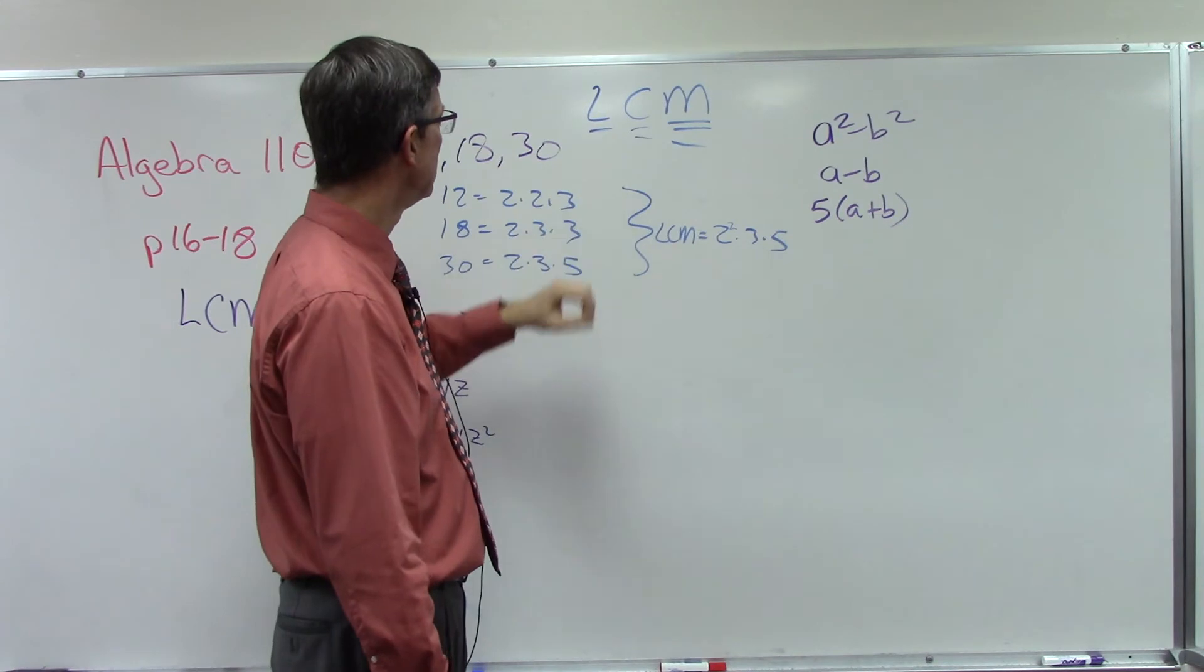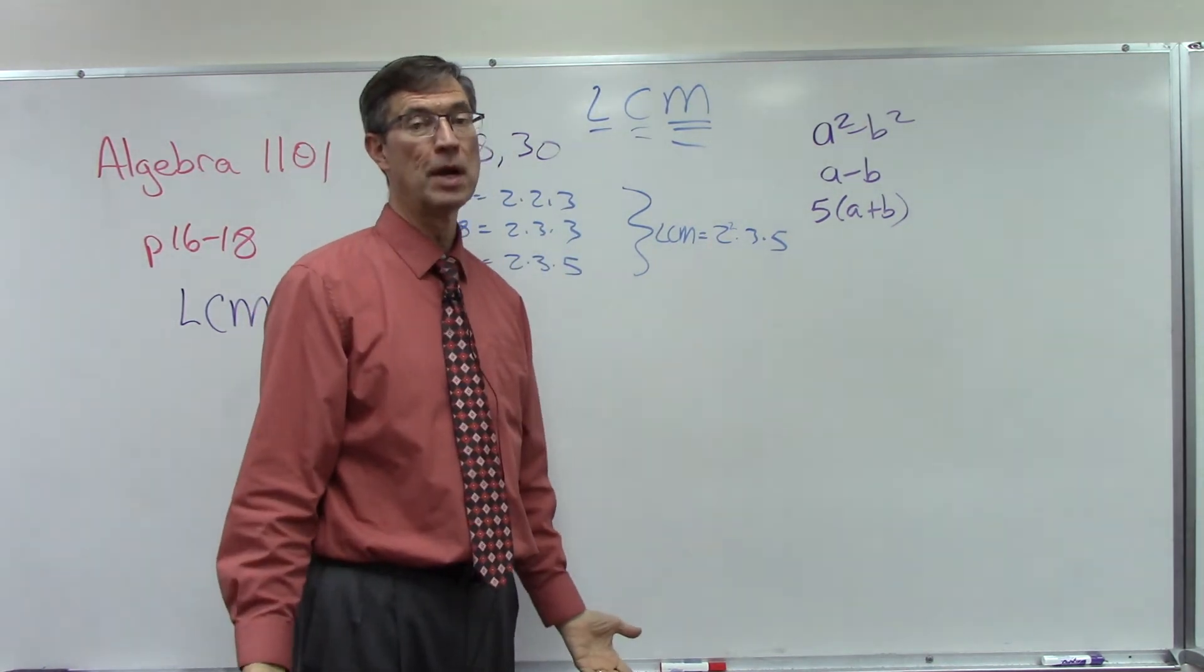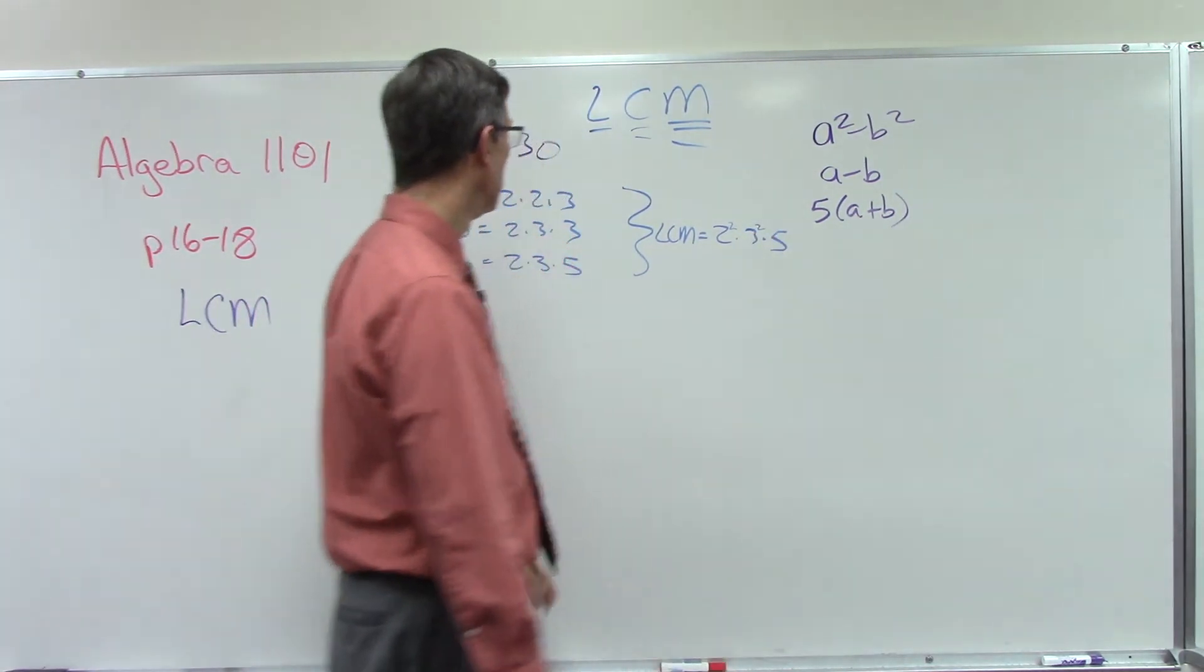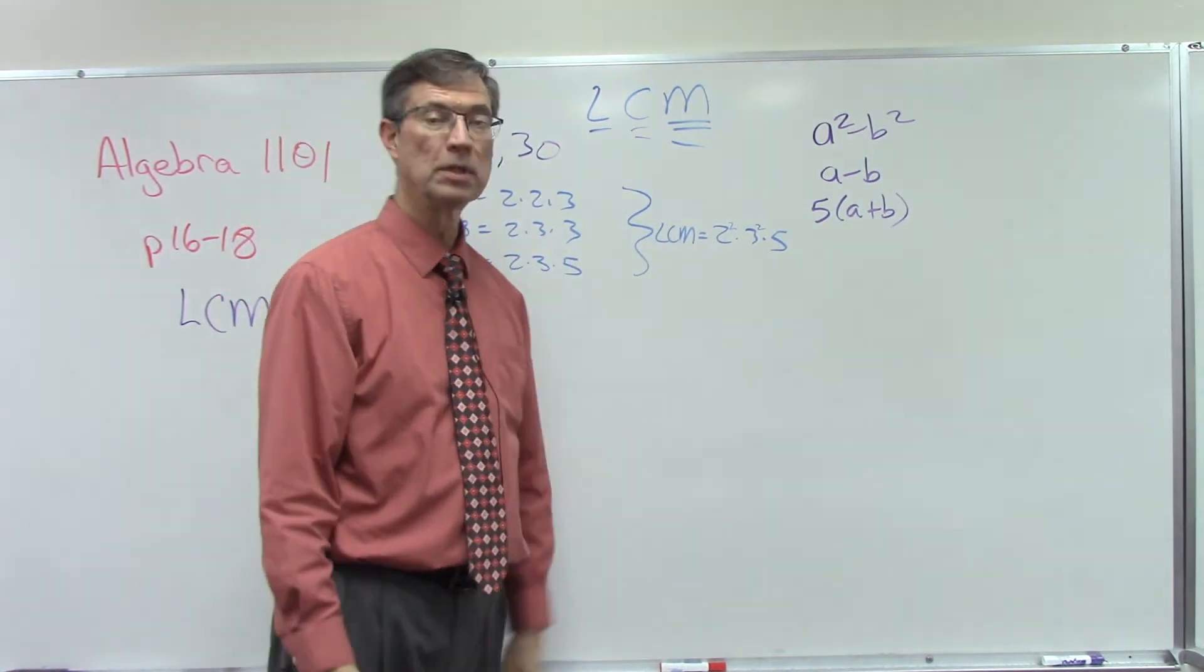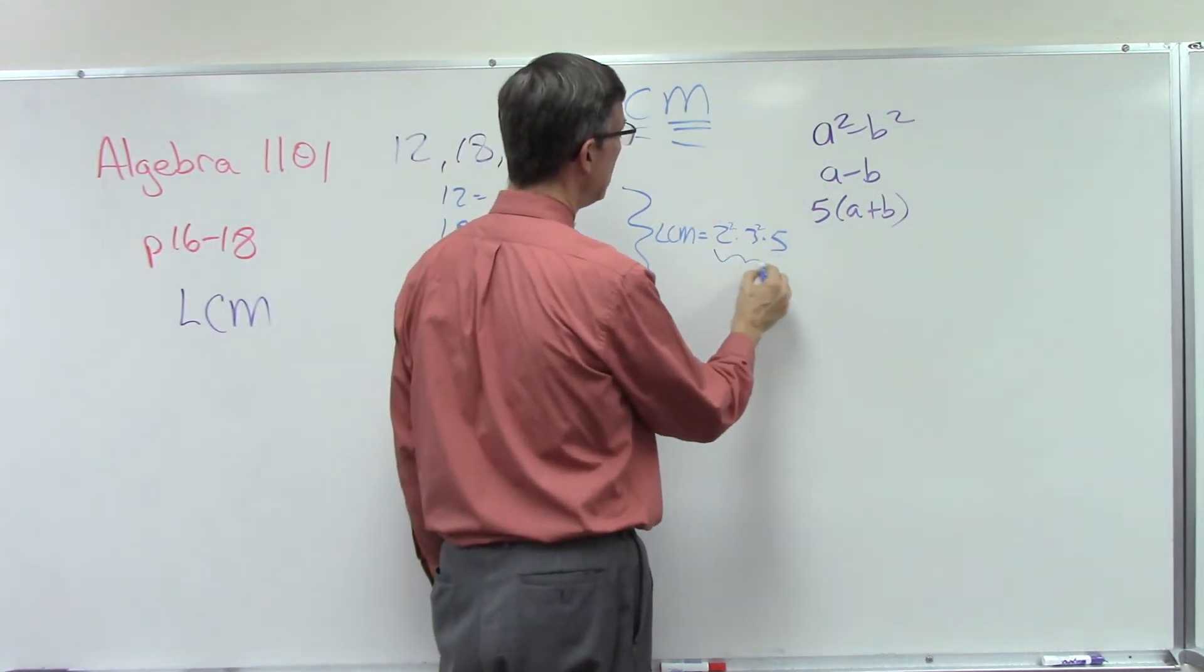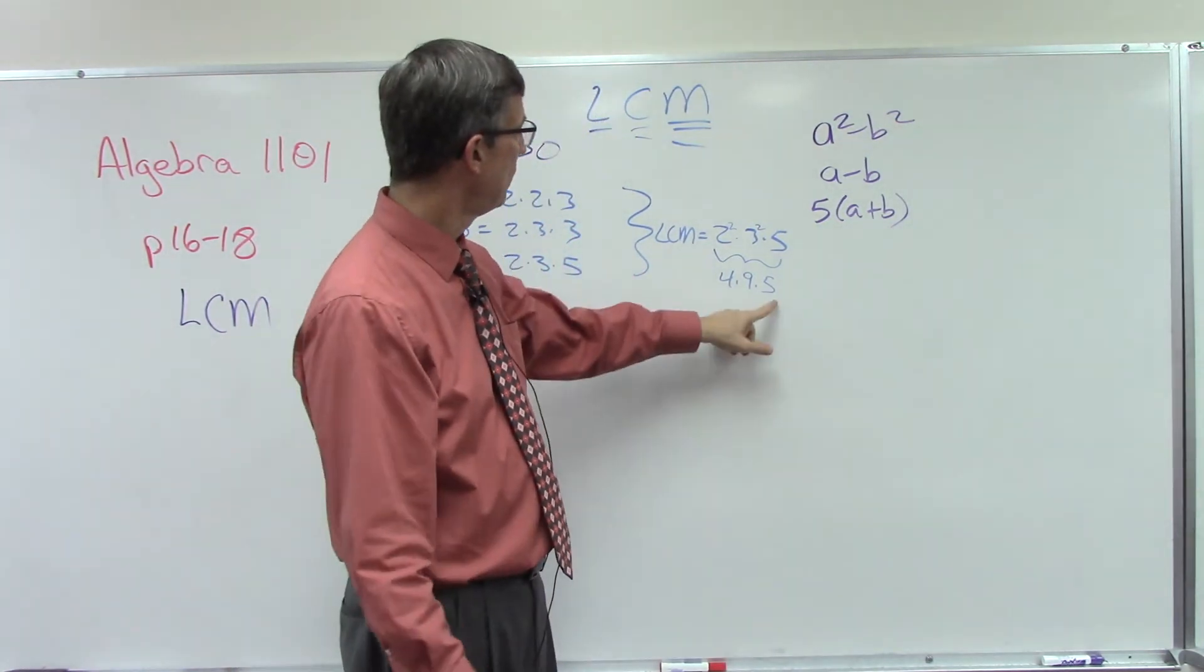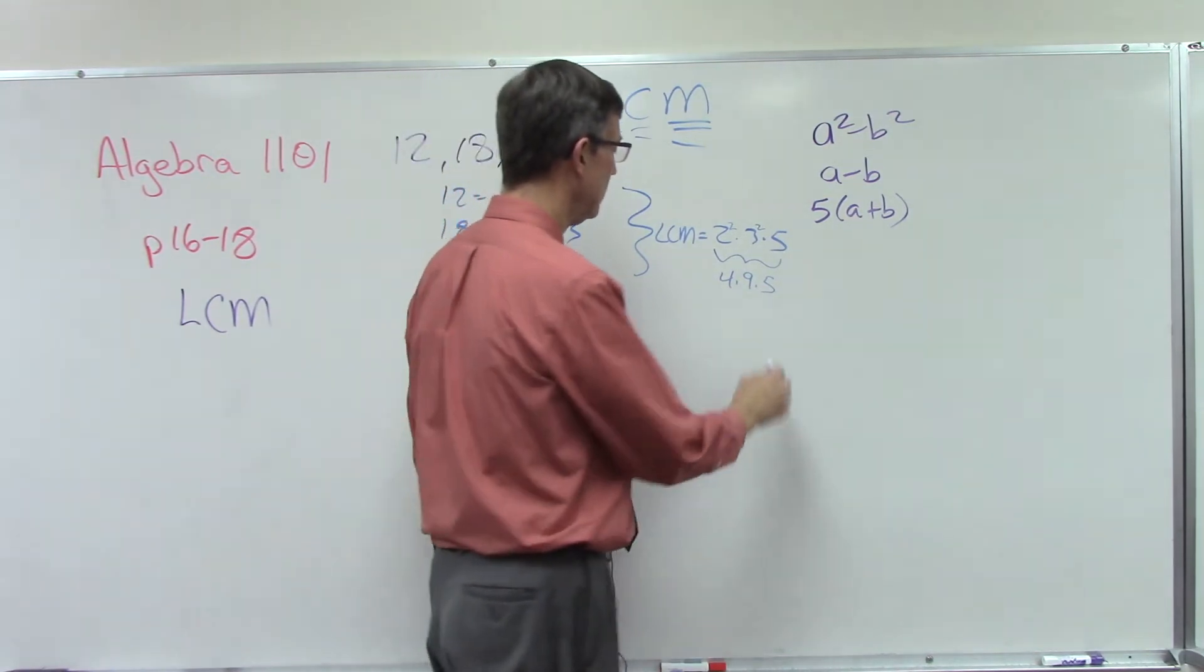3 is used once here, twice here, once here, so the most number of times that 3 is being used is twice, so we use it twice in the least common multiple. 5 is only used once, so I'll just leave it once in my answer. Then we can multiply these together: 4 times 9 times 5. 4 times 5 is 20, 20 times 9, so that would be 180.